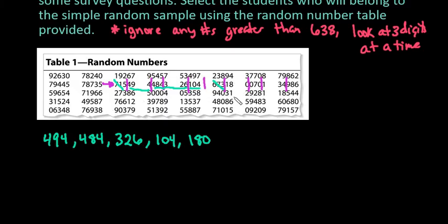So I have one, two, three, four, five, six, seven, and we need one more but unfortunately 986 is too large. So then I would just go to the next row and my last person would be 596.